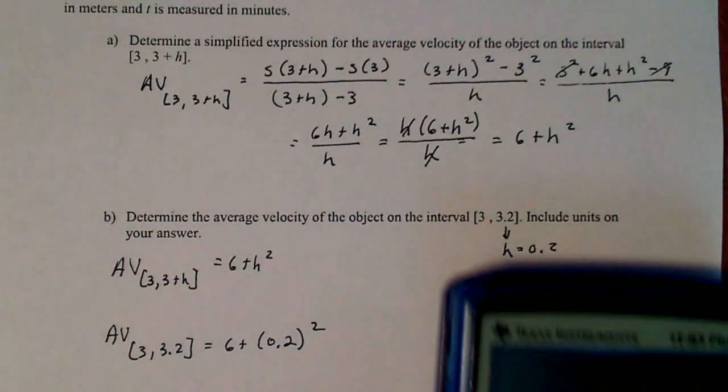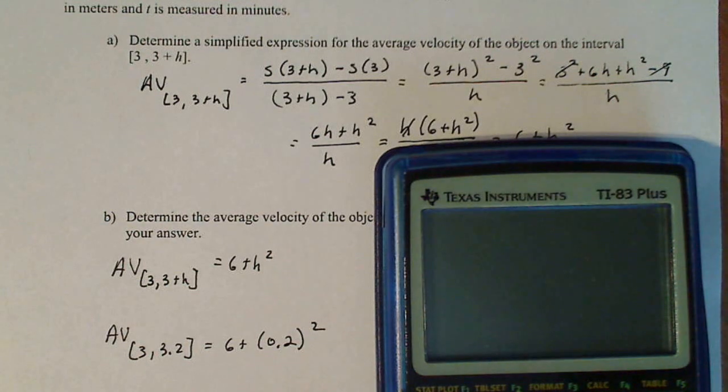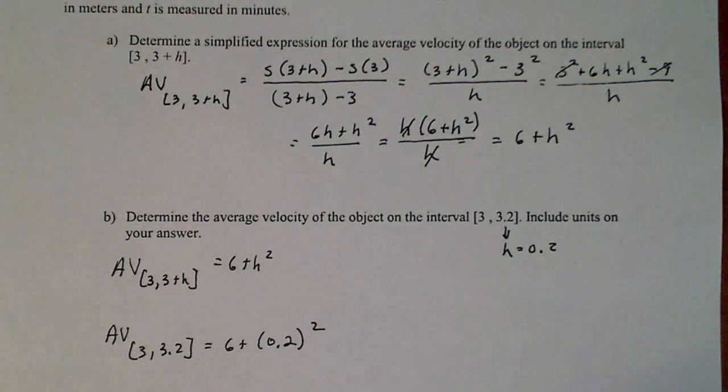So don't go redoing everything. Just use the formula that you did. Now when I clear this out and I do 6 + 0.2, I get my average velocity is 6.04.